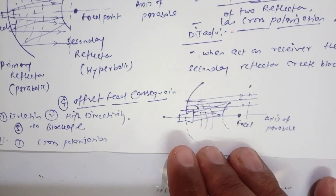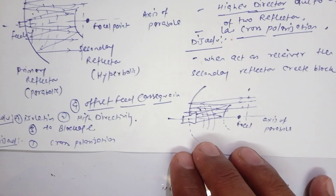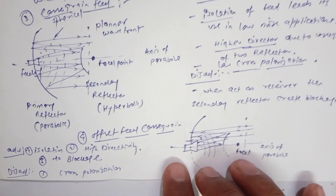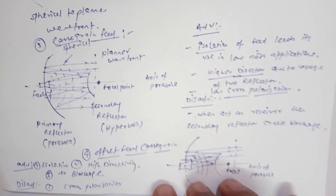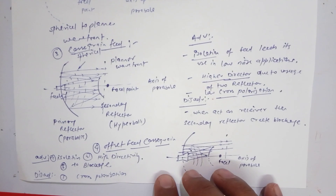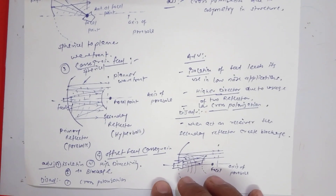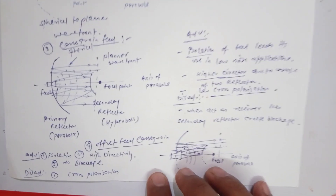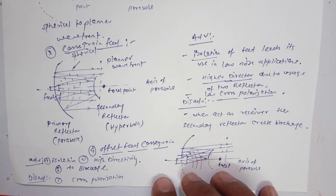Different feeding structures can be provided for the parabolic reflector depending on the application. Most commonly, the Cassegrain feed structure is used for parabolic reflectors.